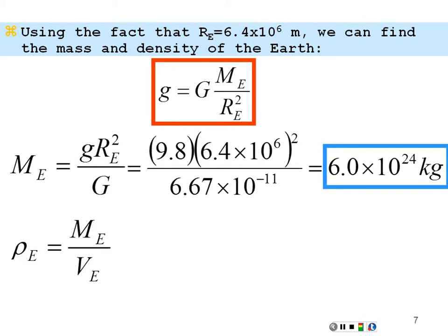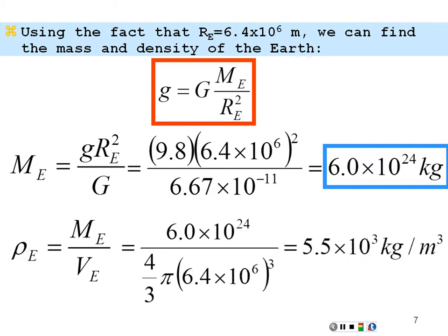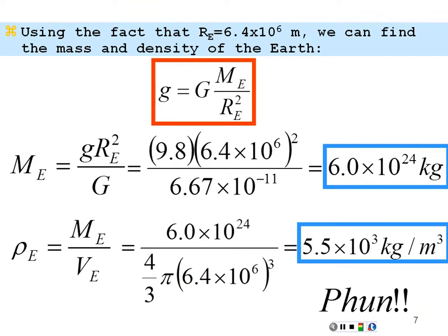You could also calculate the density of the Earth: mass of the Earth divided by its volume, treating the Earth as a sphere — 4/3 pi R cubed. Putting in those numbers, the average density of the Earth is 5.5 times 10 to the 3 kilograms per meter cubed, which is five and a half times the density of water — since pure water is 1,000 kilograms per meter cubed by definition. You could do that at the beach as well.